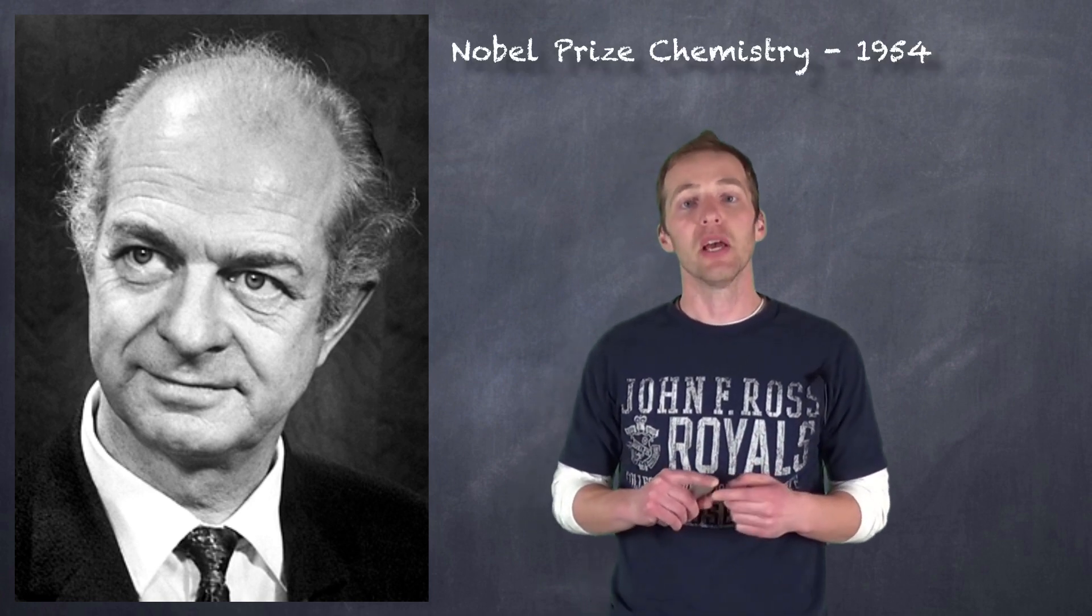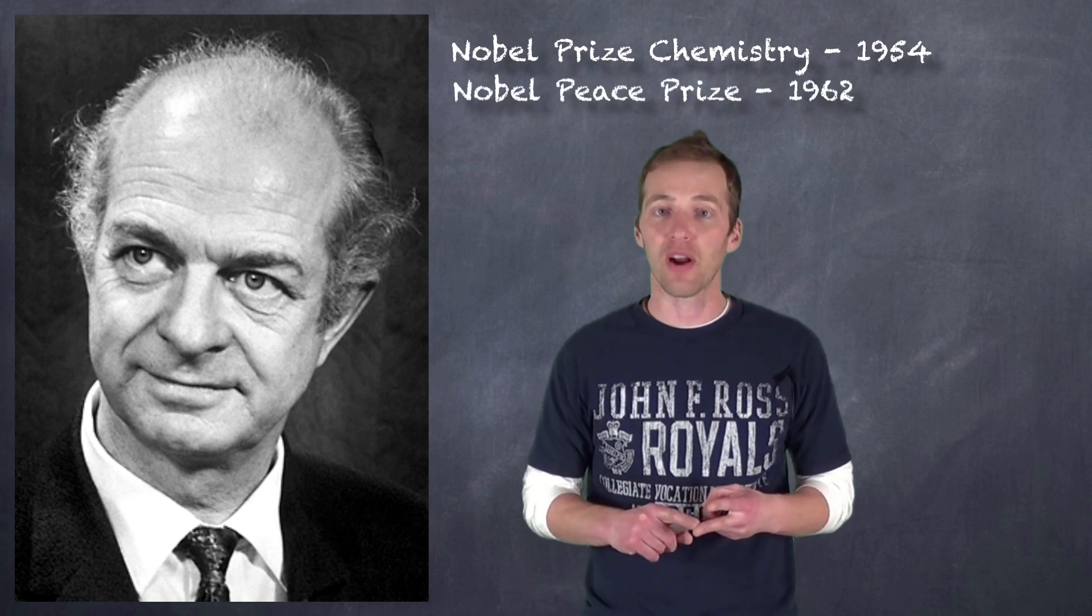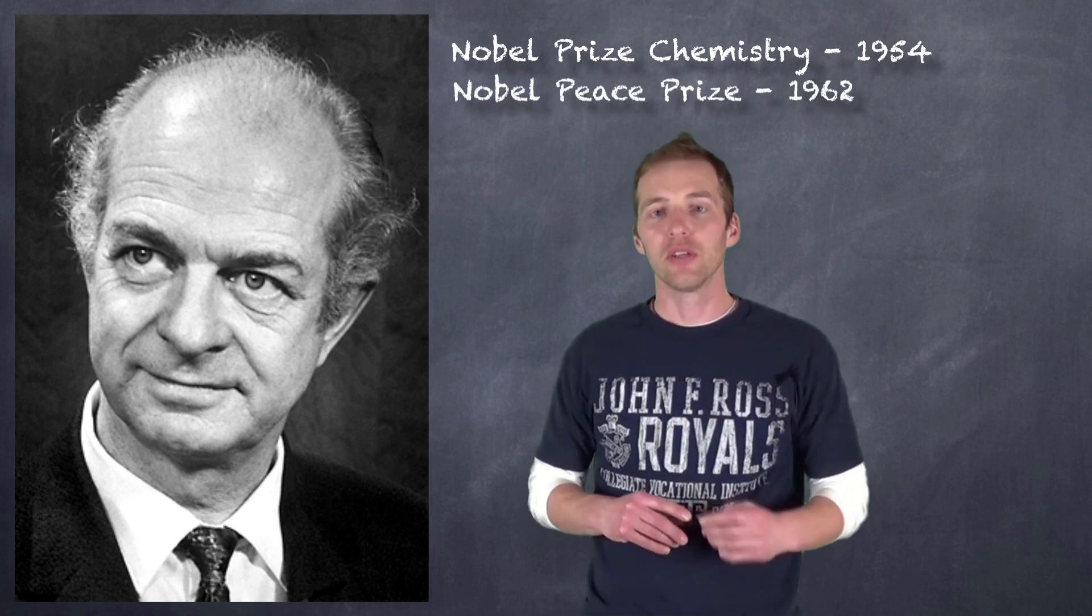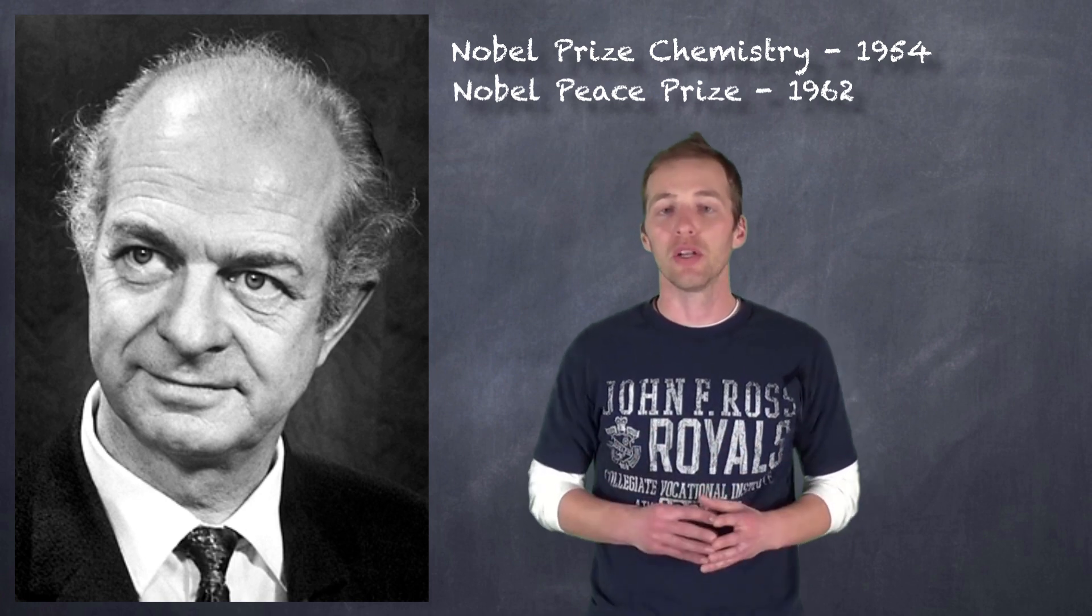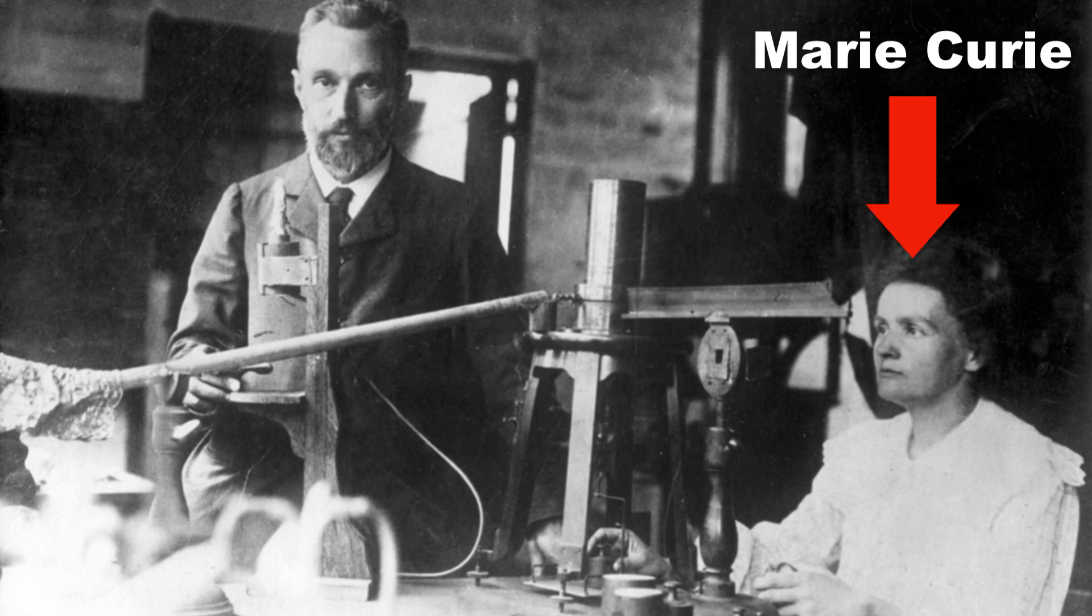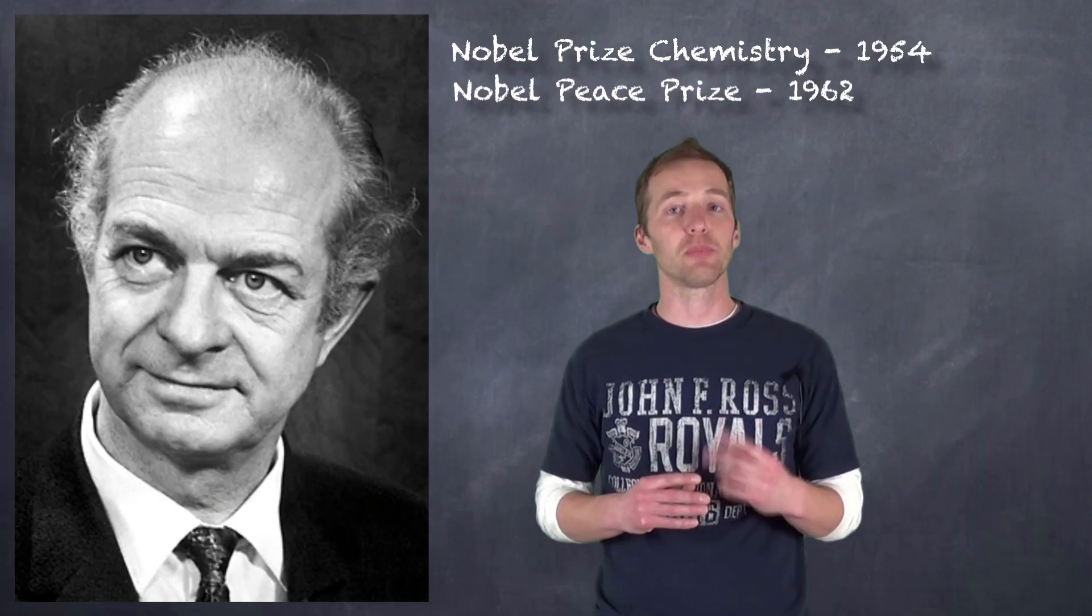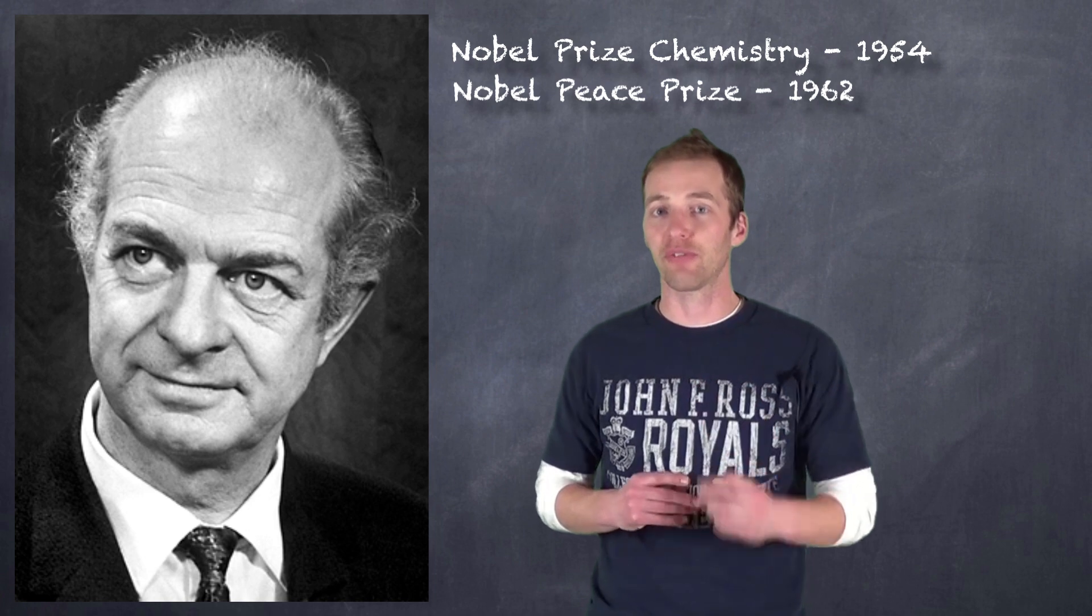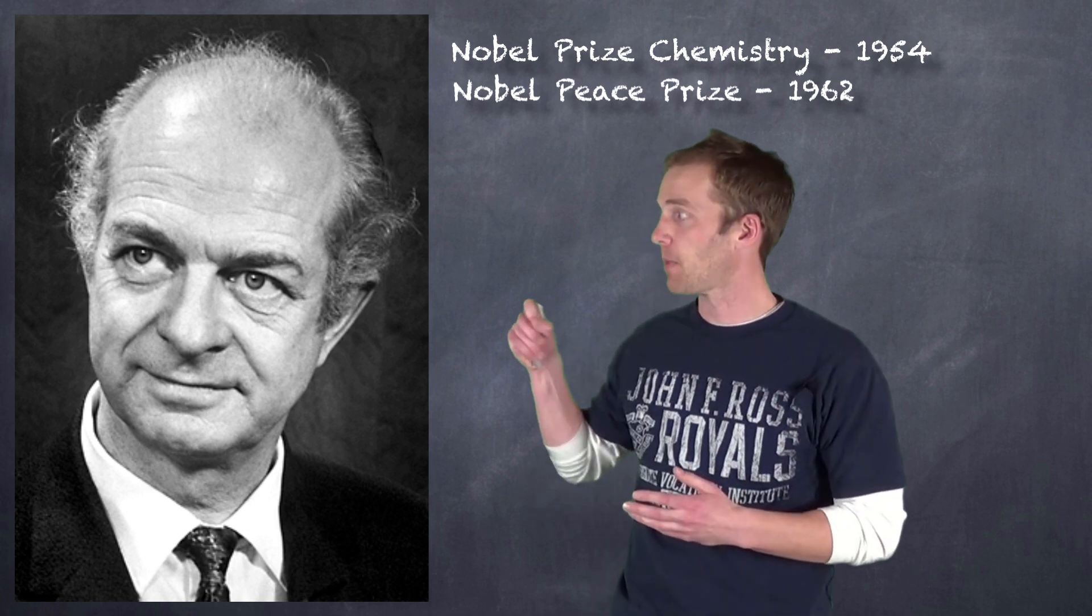In fact, he became a rather well-known peace activist. So not only did he win the Nobel Prize in chemistry, but he also won the Nobel Peace Prize. He's one of the only individuals, four, to have ever won two Nobel Prizes. He's one of only two individuals, Marie Curie being the other, to win them in two different disciplines. And he's the only individual who's won them individually in two different disciplines. Fist bump.